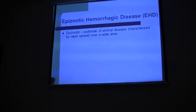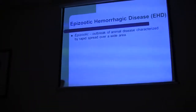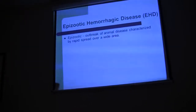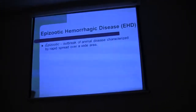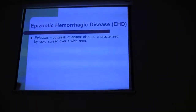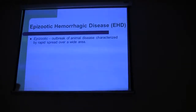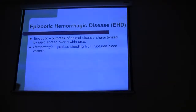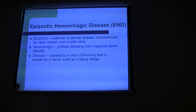Just real briefly: epizootic hemorrhagic disease, as we all call it, EHD. It's epizootic — an outbreak of an animal disease characterized by rapid spread over a wide area, and we're definitely seeing that this year. Hemorrhagic just means profuse bleeding from ruptured blood vessels. The disease is caused by a virus, an orbivirus that is spread by a vector, such as a biting midge.